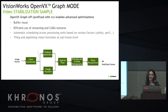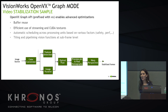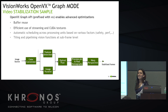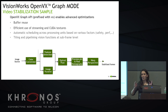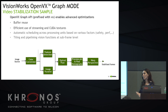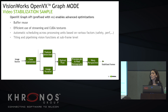The next level is graph mode — the same sample pipeline. We tried it with an object tracking sample and saw significant performance gain, something like 50 to 70%. Going from immediate mode to graph mode brings additional optimizations because you have better control of memory and asynchronous execution. In our case, efficient use of streaming and CUDA textures brought additional performance gains.